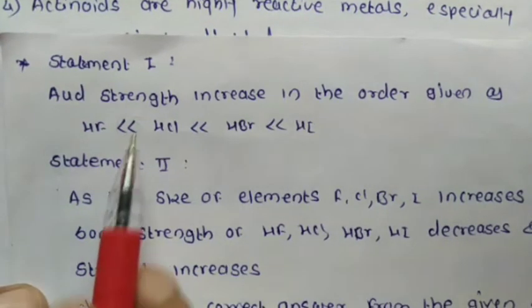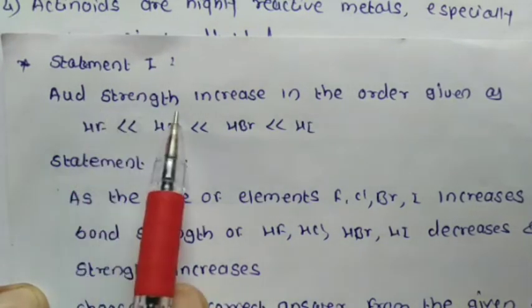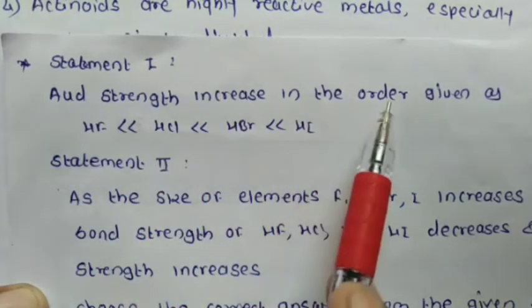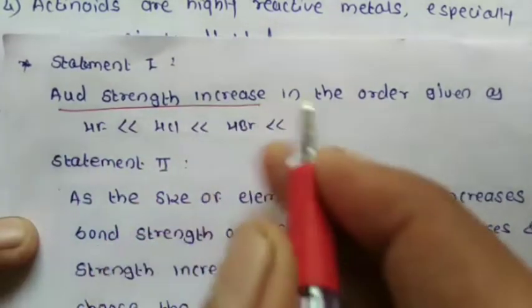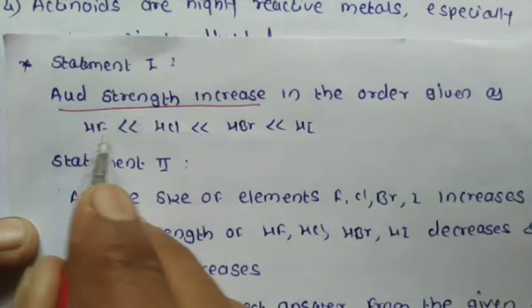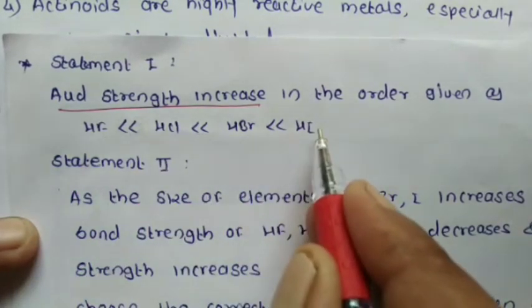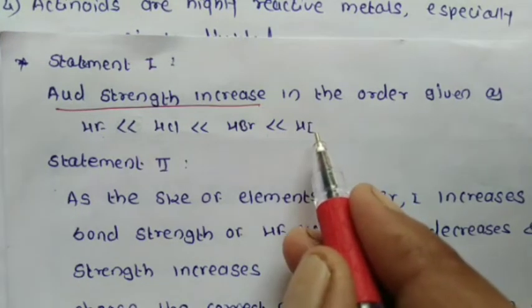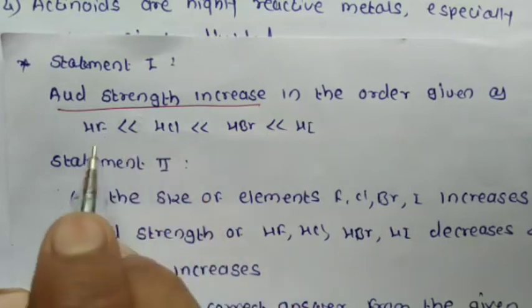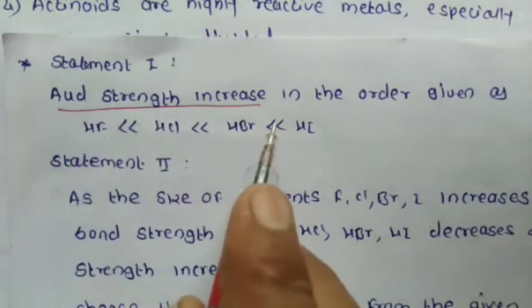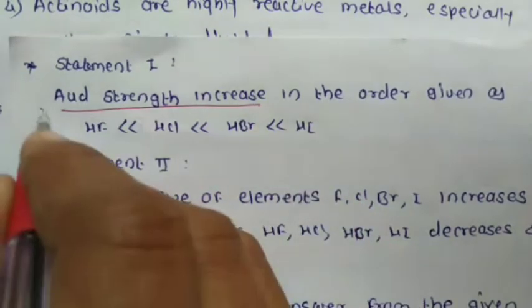Question 4: Two statements are given — choose the correct answer. Statement 1: Acid strength increases in the order HF < HCl < HBr < HI. That is, acid strength of HI is maximum, and acid strength of halides increases from fluorine to iodine. This is a correct statement.